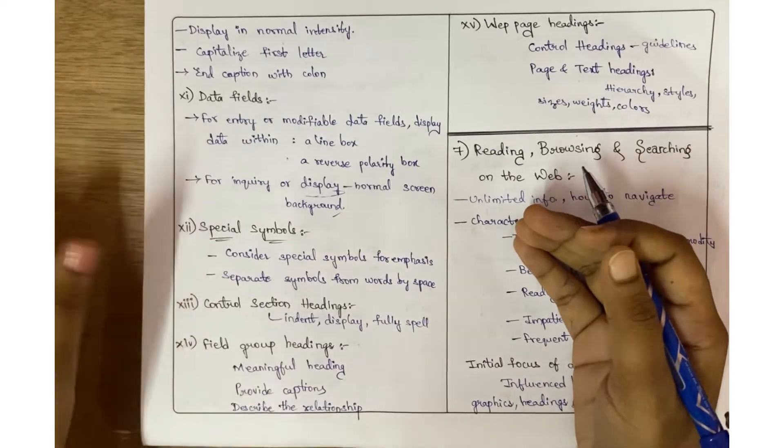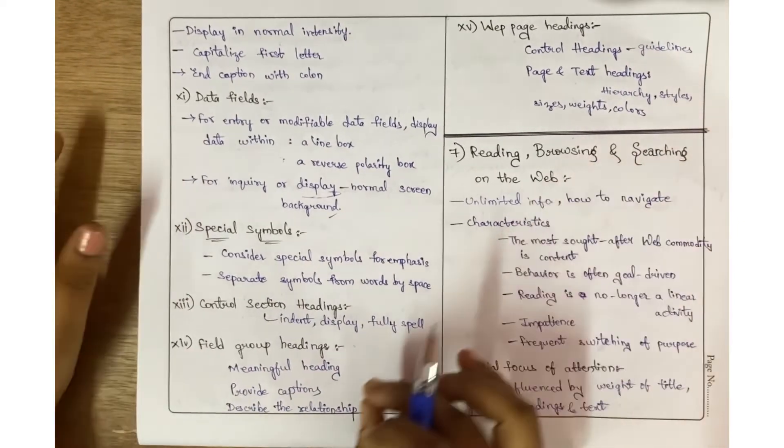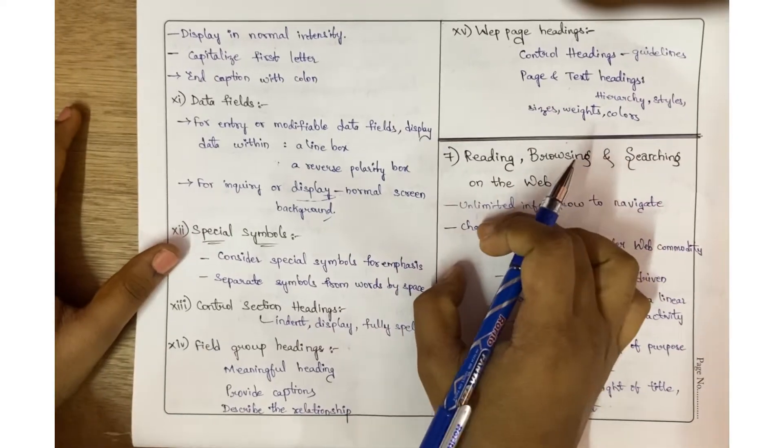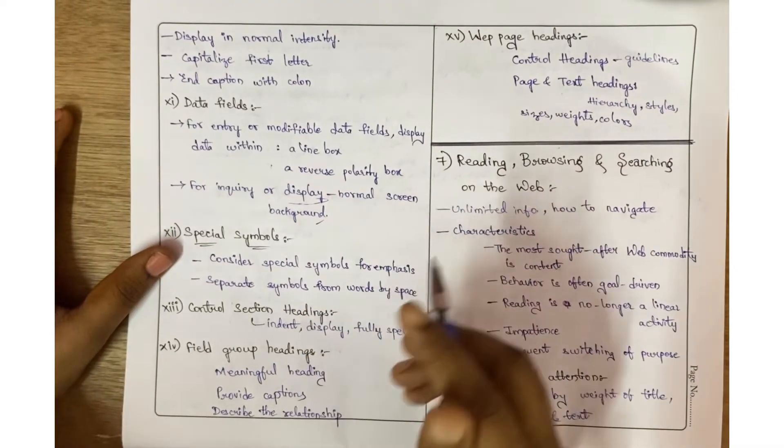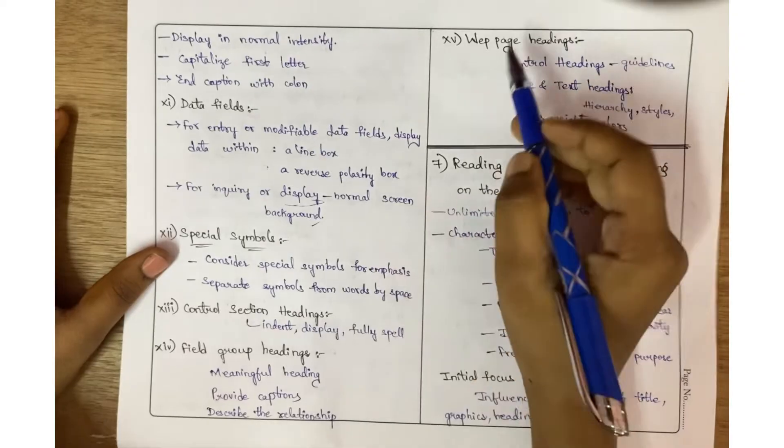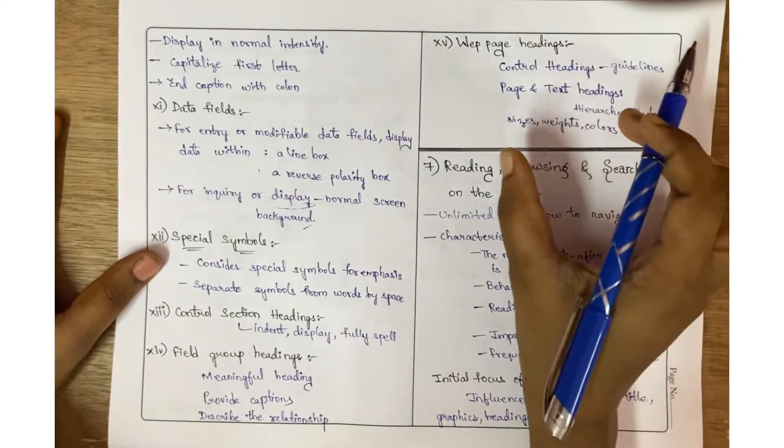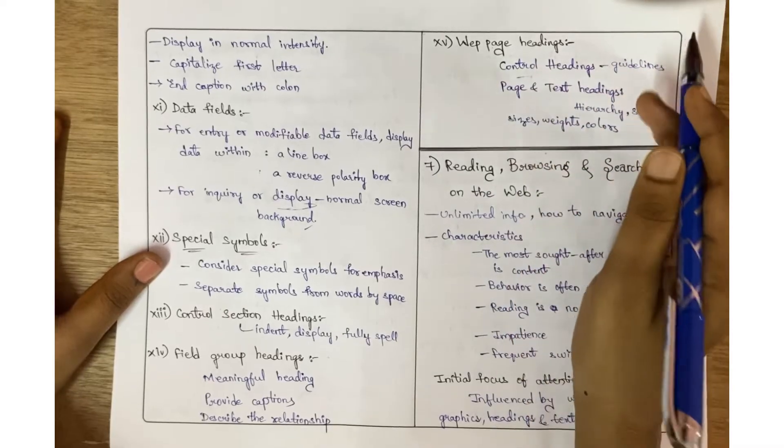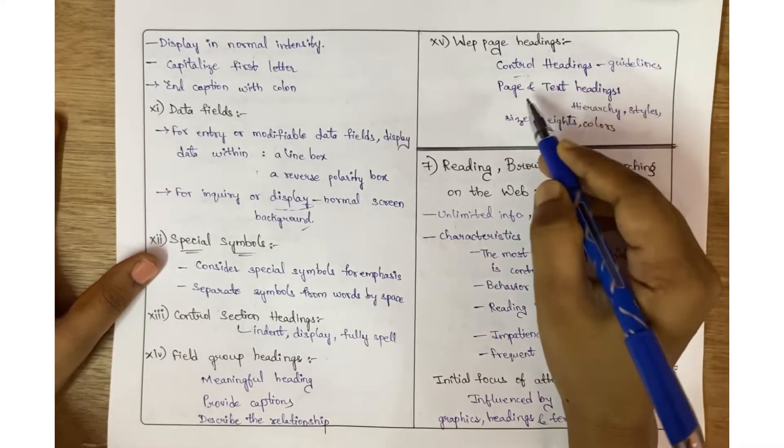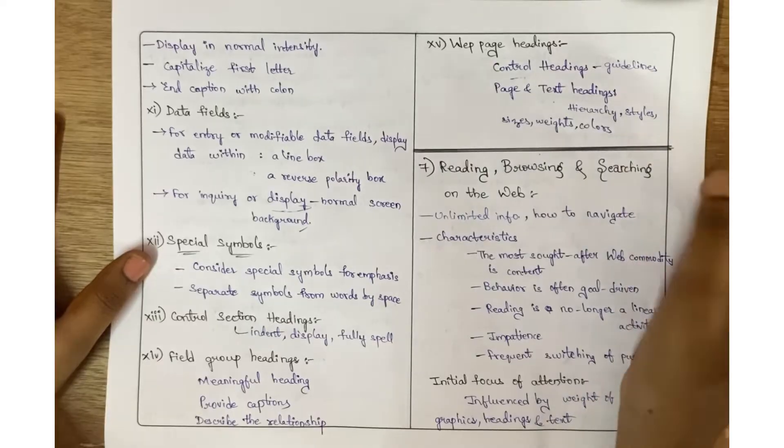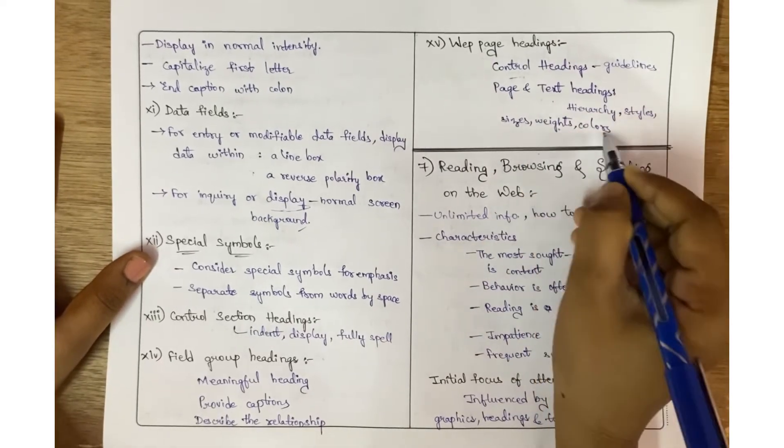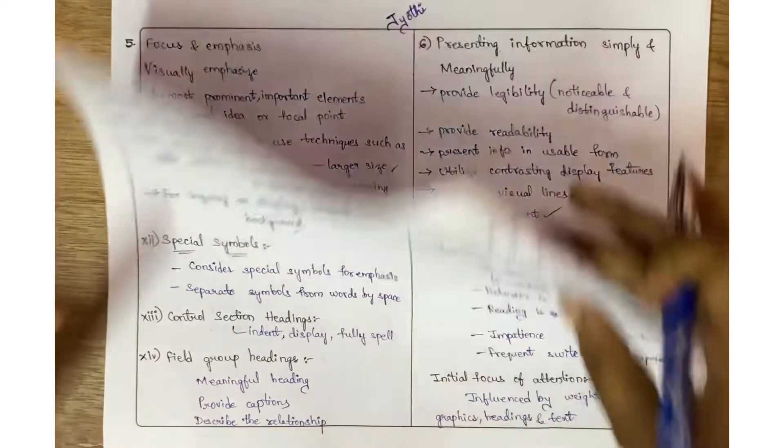Field group headings must have meaningful headings with provided captions to describe the relationship. Web page headings must be controlled with guidelines under them. Page and text headings should have hierarchy, styles, size, weights, and color.